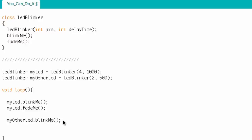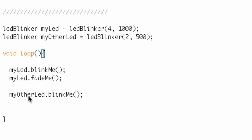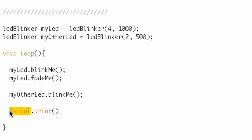Before we jump into some examples, notice this dot notation — dot blinkMe. Does this look familiar? Have you seen Serial.print? Serial is a class that Arduino uses, and print is a function of that class. Serial is built into the Arduino IDE, so you don't have to go through all the trouble of creating an instance of the class, but you're still using that class any time you use the serial library.